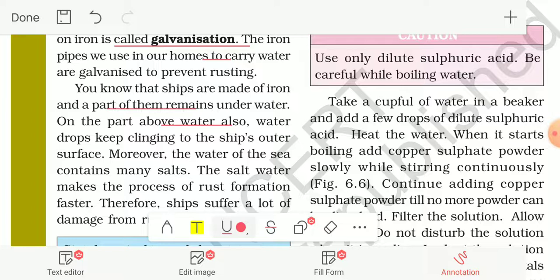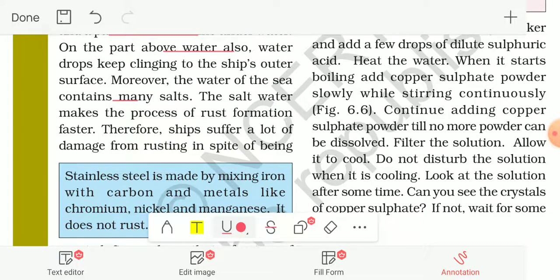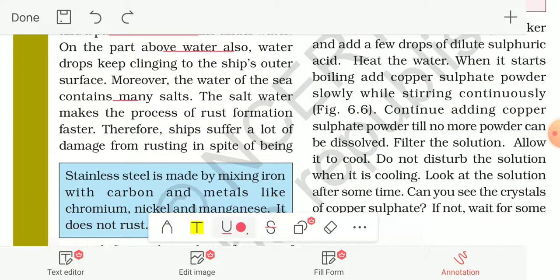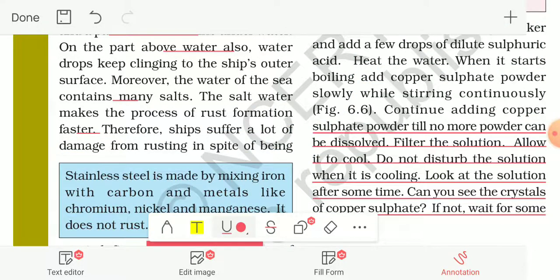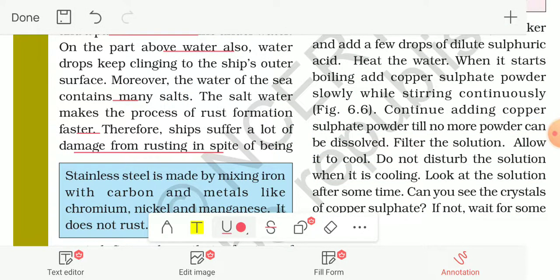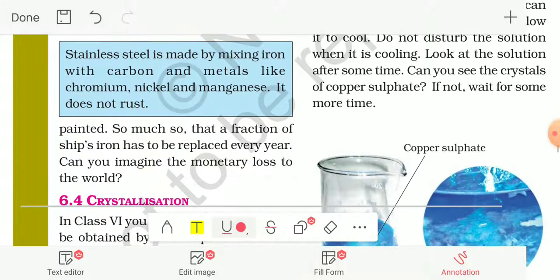The water of the sea contains many salts. The salt makes the process of rust formation faster. Therefore, ships suffer a lot of damage from rusting in spite of being painted.